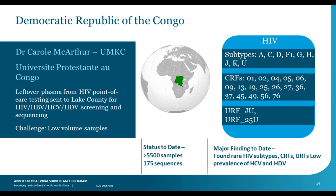The Democratic Republic of Congo collaboration — where samples can come to Chicago — is with the University Protestant in Congo. We've received about 5,500 samples and generated about 200 sequences, screening for HIV, Hep B, Hep C, and Hep Delta. Interestingly, we find a lot of pure subtypes — A, C, J, K — which are rarely found in many other parts of the world. We also found circulating recombinant forms and some unique recombinant forms. We're continuing to do more sequencing, aiming for a few thousand sequences from Congo.